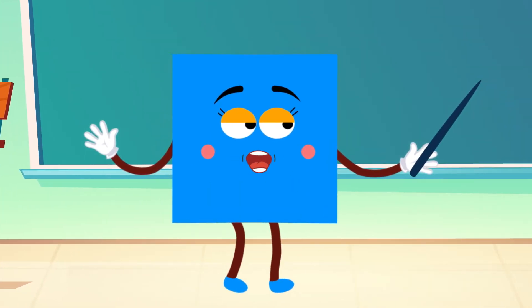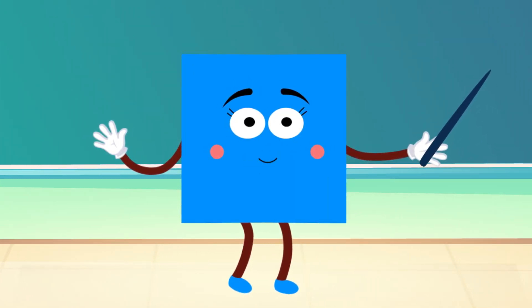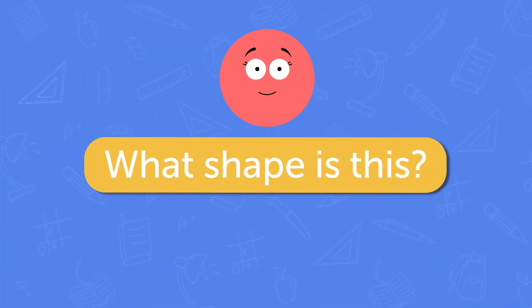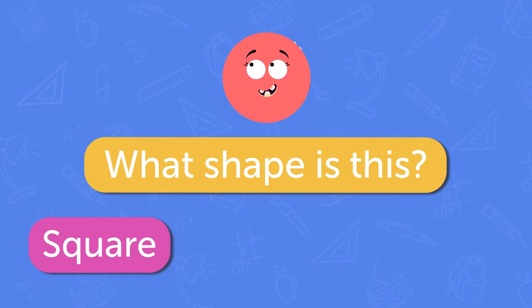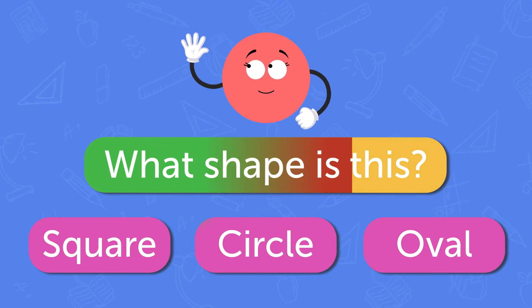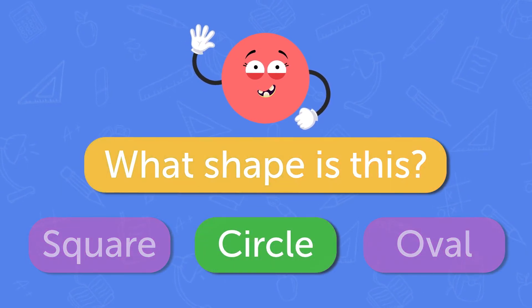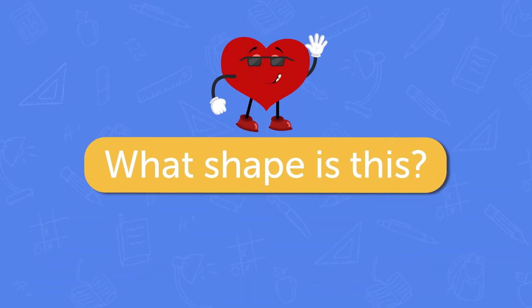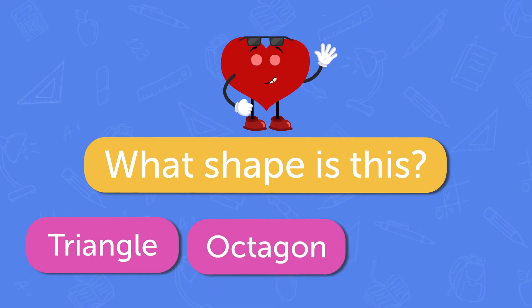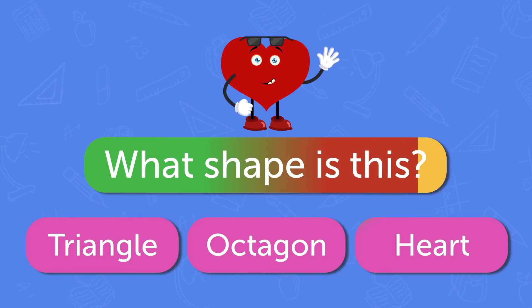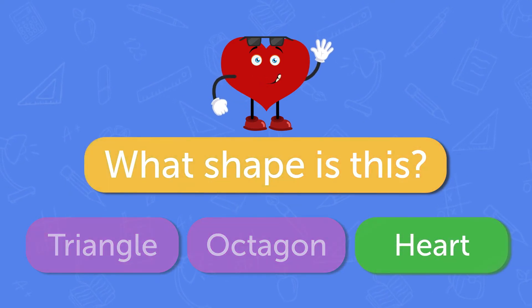We now know our shapes. Let's start the first quiz. What shape is this? Square, Circle, Oval. Circle. What shape is this? Triangle, Octagon, Heart. Heart.